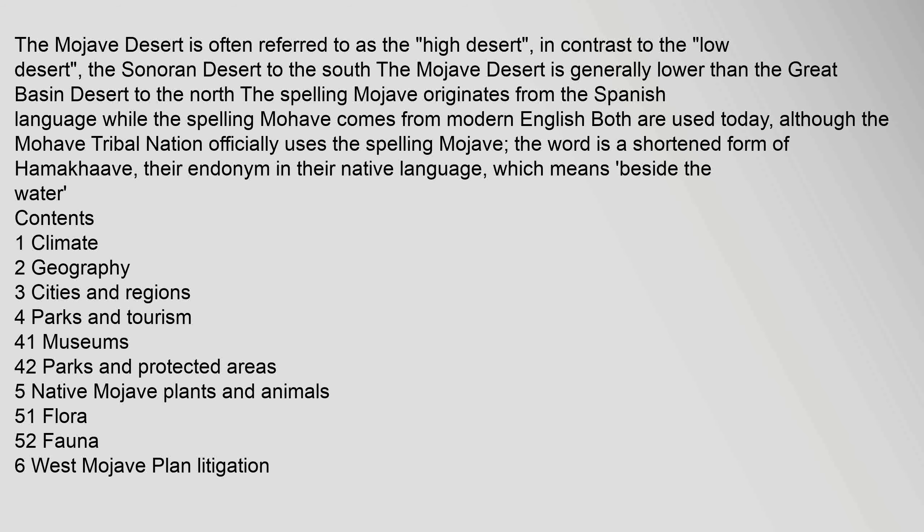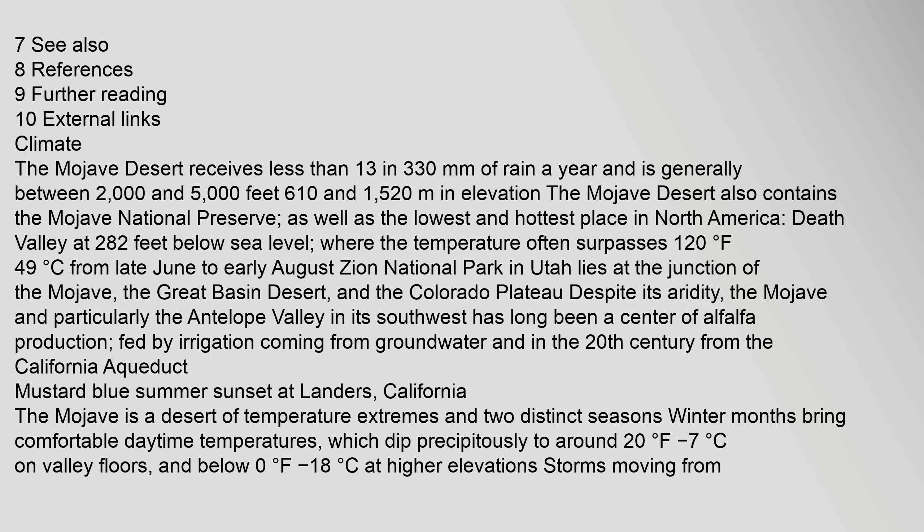The video covers the following contents: climate, geography, cities and regions, parks and tourism, museums, parks and protected areas, native Mojave plants and animals including flora and fauna, West Mojave plan litigation, references, and external links. The Mojave Desert receives less than 13 inches of annual rainfall.